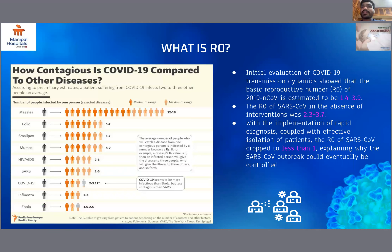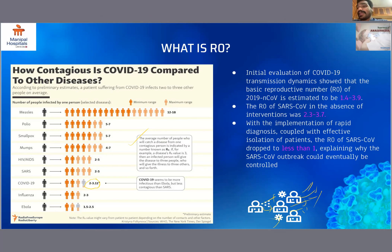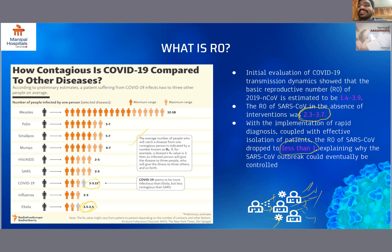The R0 is the reproductive index of the virus — the average number of people who will catch the disease from one contagious person. In the case of COVID-19, we have an R0 of 2 to 3.11, meaning one person can infect three people, and those three people can infect nine others, and so on. COVID's R0 is more than Ebola, which is 1.5 to 2, but less contagious than SARS. Before any intervention, SARS had an R0 of 2.3 to 3.7, but after rapid diagnosis coupled with effective isolation, the R0 of SARS coronavirus dropped to less than one, which explains why the SARS outbreak could eventually be controlled.